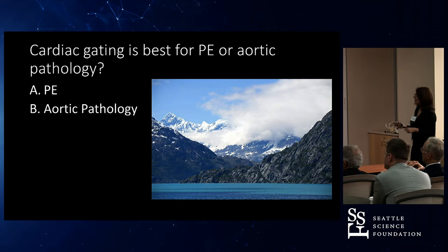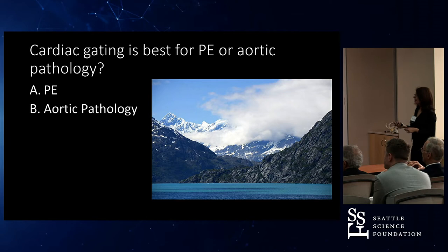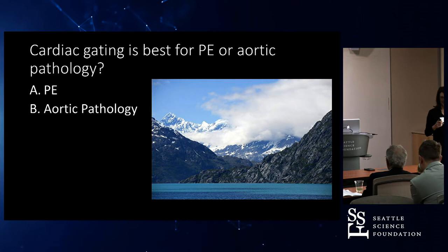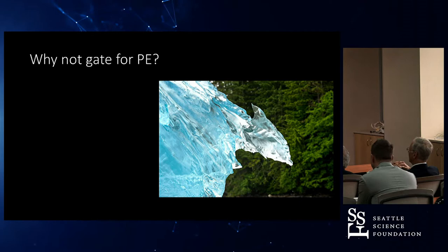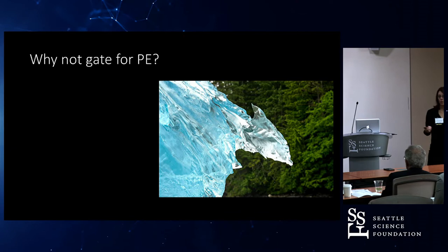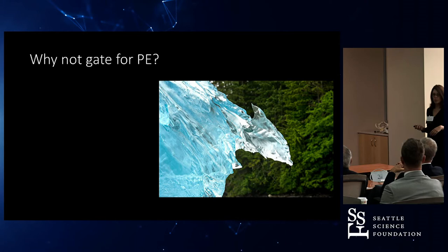Here's the quiz. Cardiac gating is best for PE or aortic pathology? Aortic. Okay, so why not gate for PE? Radiation dose. We'll probably do five to ten CTs today from the ER, and everybody doesn't need an extra dose of radiation.